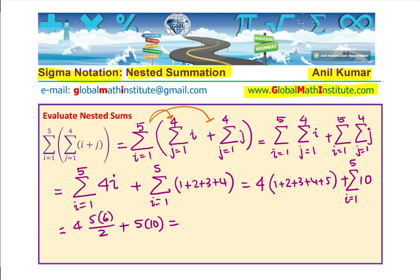And that gives us 4 times 2 times 10 times 6, which is 60 plus 50, and then you get 110. Is that clear to you? So that is how we evaluate the nested sum.